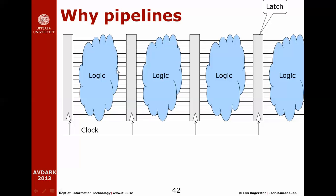Pipelining is a way of clocking the CPU faster, but that doesn't mean each instruction executes faster — the latency from start to finish of one instruction is the same. The neat thing about pipelining is that you can be working on many instructions at the same time, gradually forwarding results. If the pipeline works well, you can complete one instruction every cycle, so the throughput is high because the clock frequency is high.